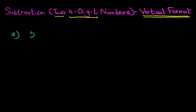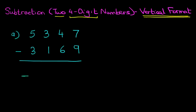What is 5347 minus 3169? Let's put a nice big equal sign over here. Let's label the columns. We've got units, tens, hundreds, and thousands.